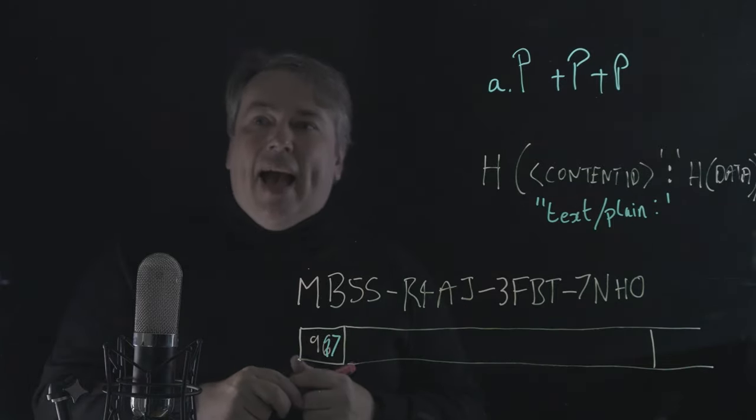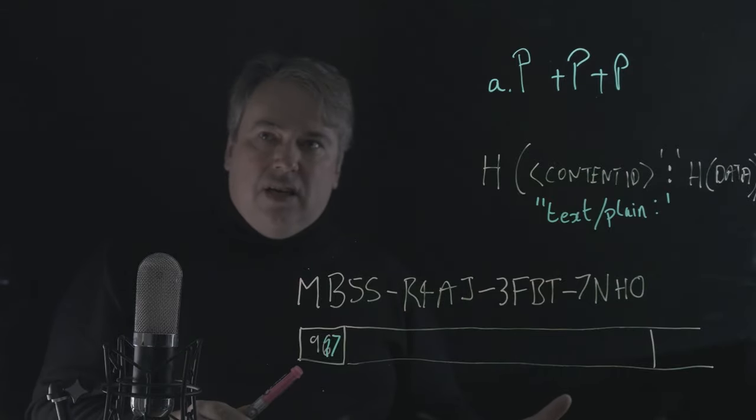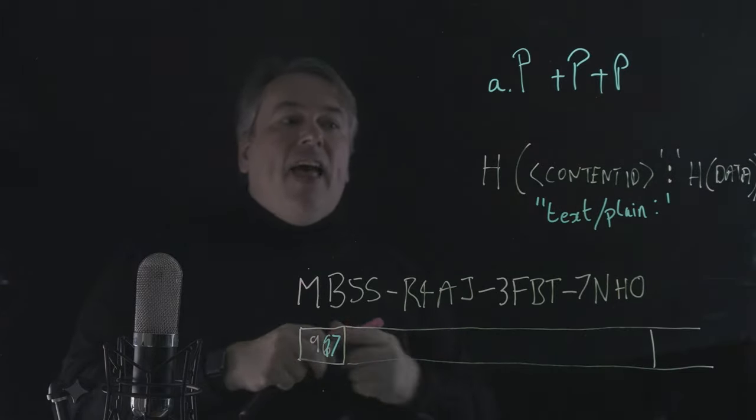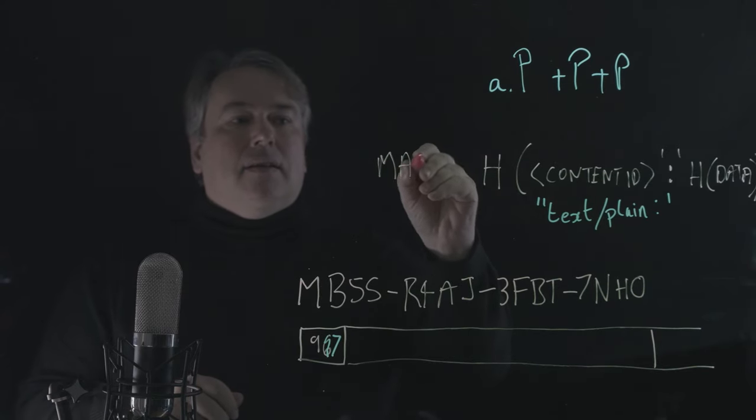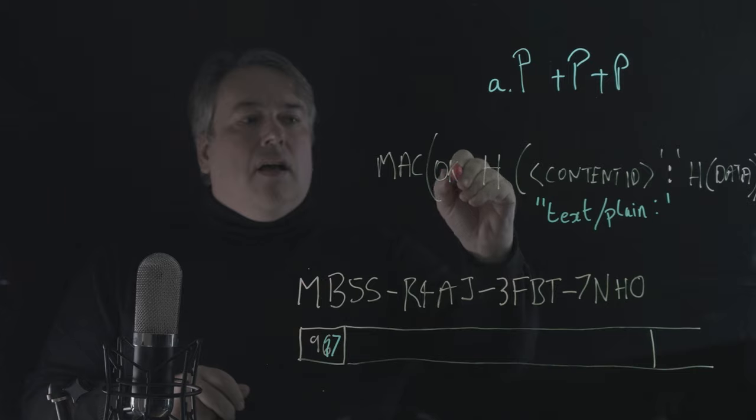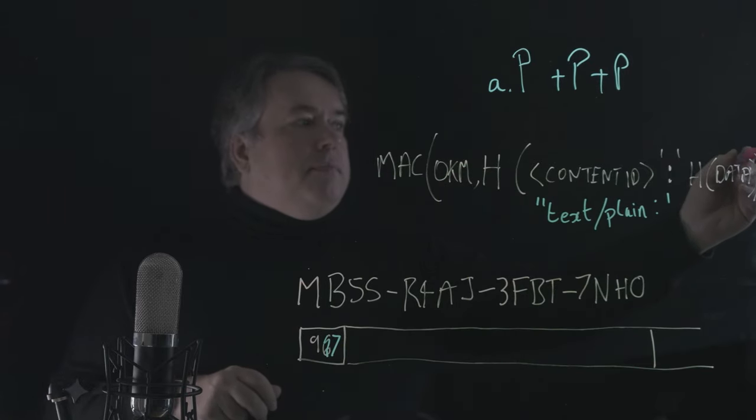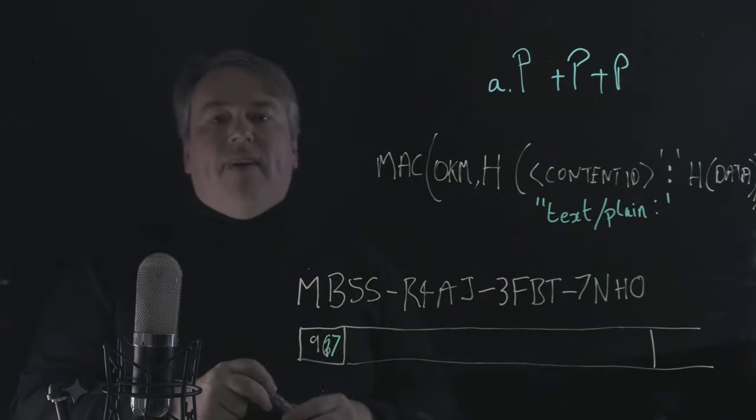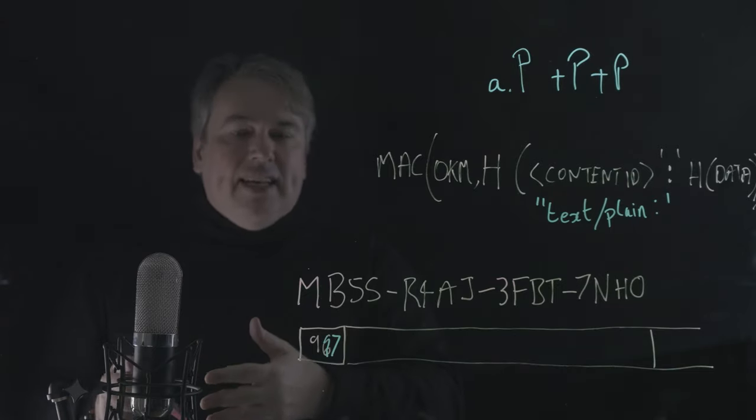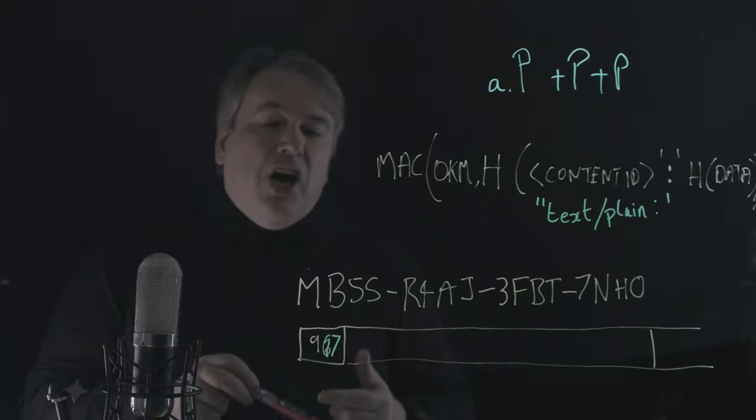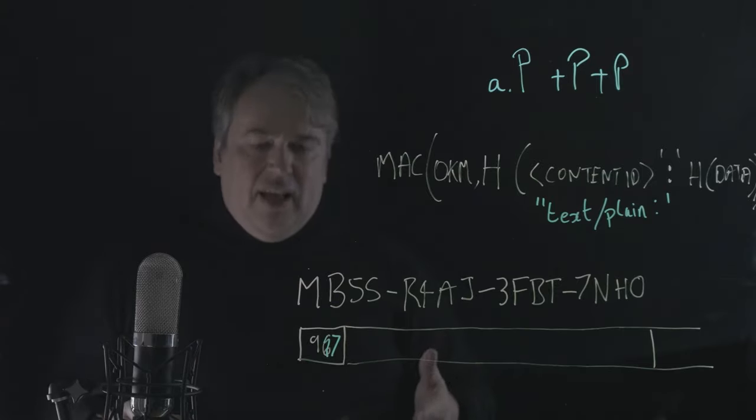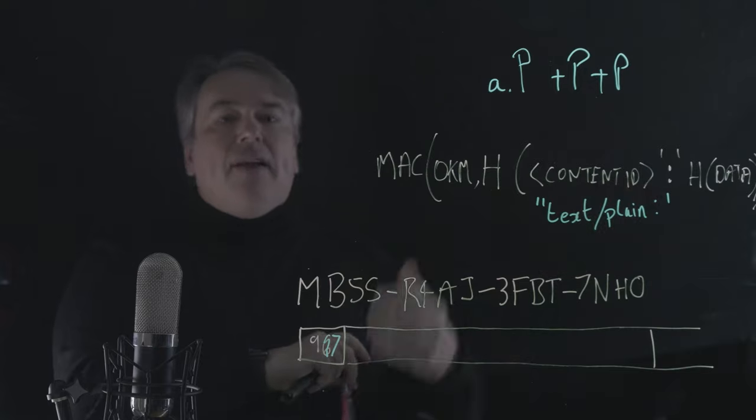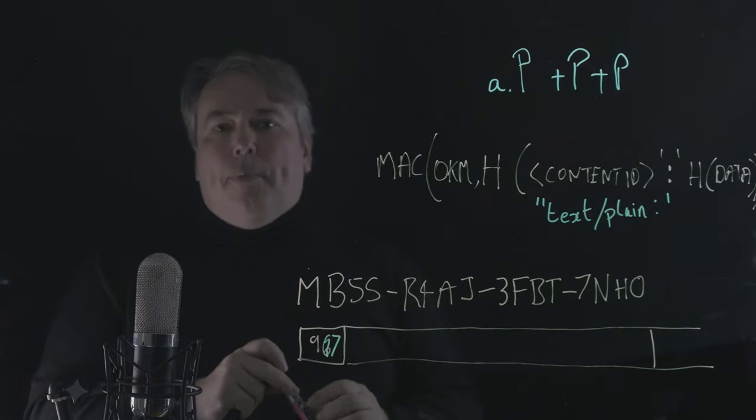So the next UDF adds a message authentication code. So we calculate the content digest in the normal fashion. And then we calculate the MAC of some keying material and that content value. And the keying material, the OKM value, is generated originally from a Unicode password. So this is a way that we can blind the keyword, blind the fingerprint with respect to a password. Well, what use could this be?